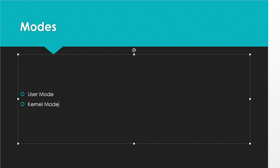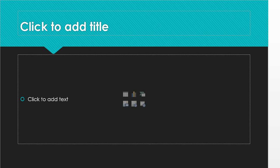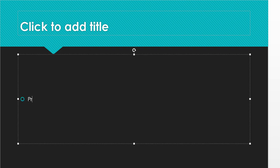You can ask: what is a process? A process is nothing but a program in execution. Remember this point — it is very important. This will come later in process scheduling, but for now understand that a process is a program in execution. If you run any software or any program — we can use these synonymously here — software is a collection of programs, so you can call any software a program for the operating system subject.